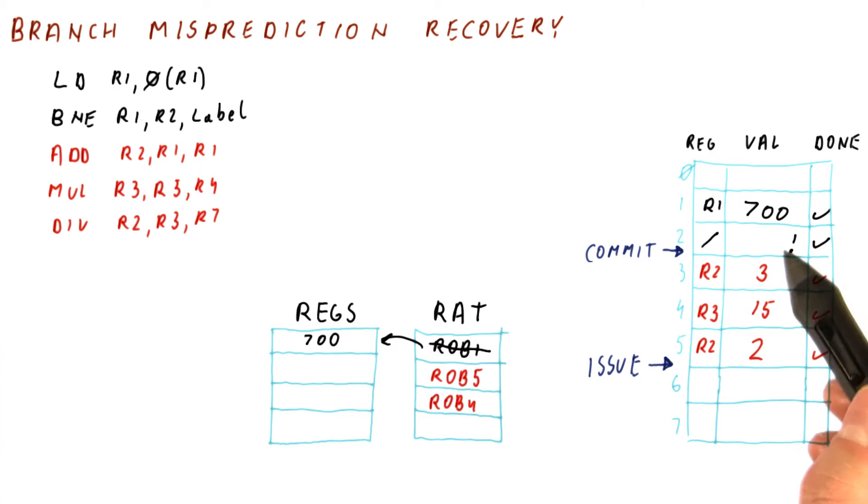But if it's been mispredicted, and it was, what we do is we do the recovery before we restart the fetch from the correct place. How do we do this recovery?